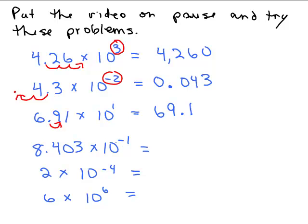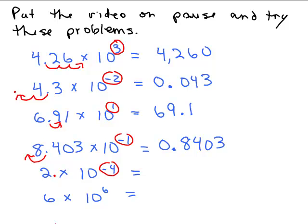8.403 times 10 to the negative 1: any time you multiply by a negative exponent you get a smaller number, so move the decimal to the left, giving 0.8403. Then 2 times 10 to the negative 4: you don't see a decimal point but we get a smaller number. The decimal is after the 2, so move it 4 places to the left, filling in 3 zeros. The answer is 0.0002.